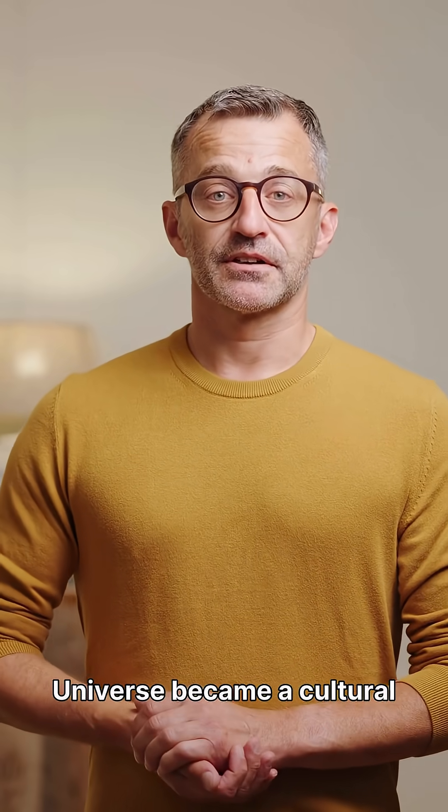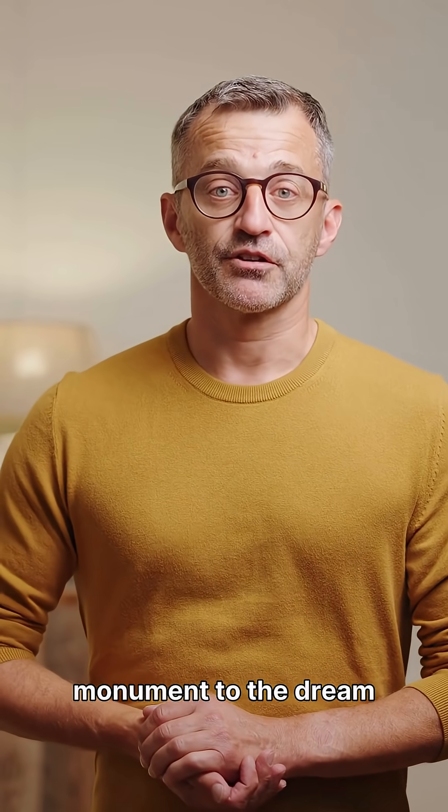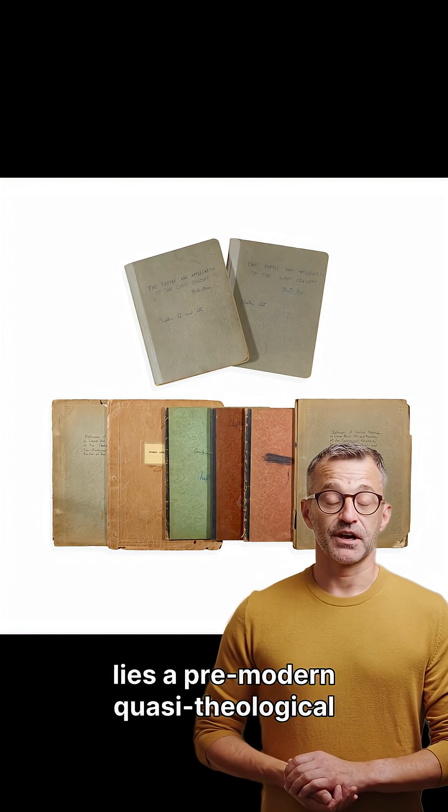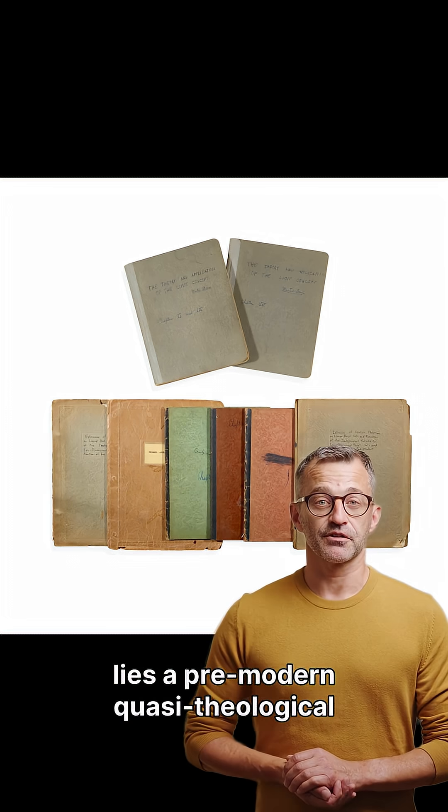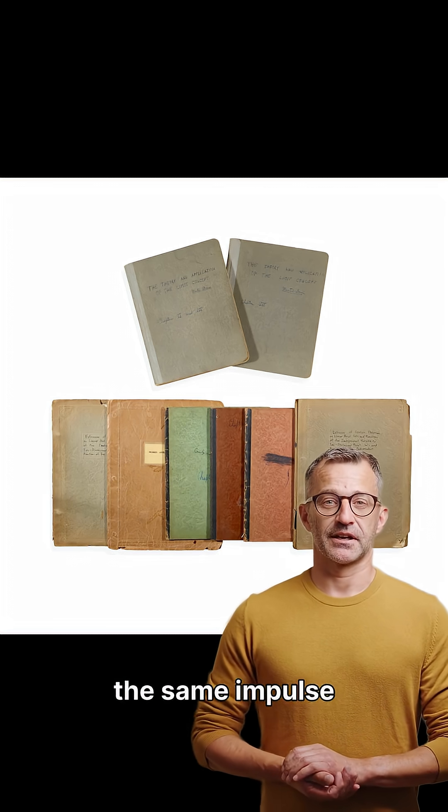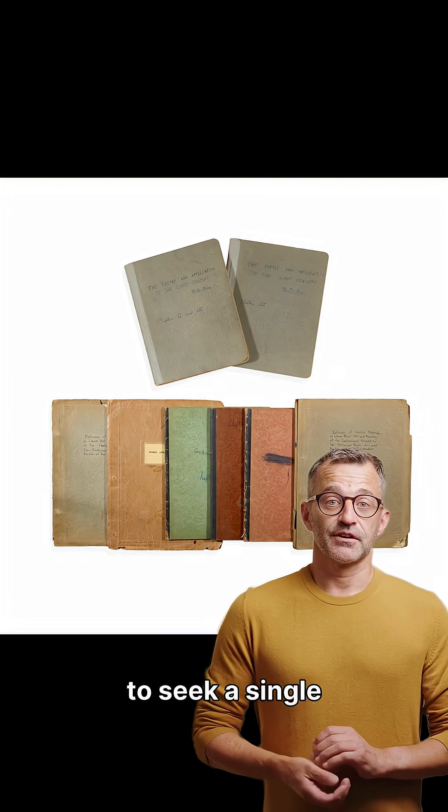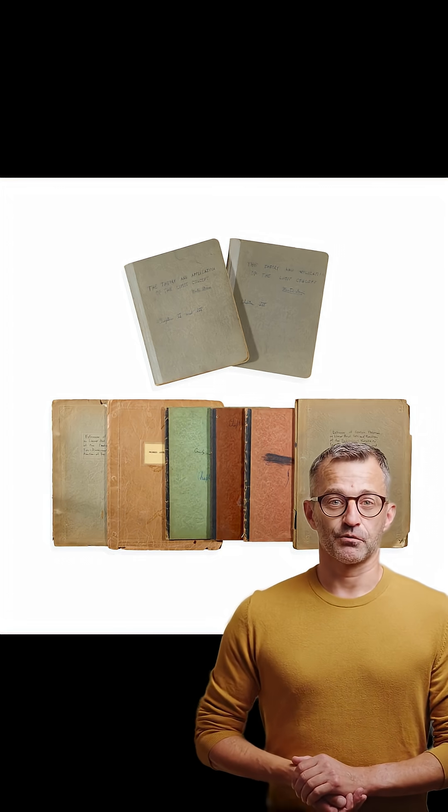Brian Greene's The Elegant Universe became a cultural monument to the dream of ultimate unification. But beneath its lyrical prose and seductive mathematics lies a pre-modern, quasi-theological desire for ultimate simplicity, the same impulse that once drove metaphysicians to seek a single divine principle behind all appearances.